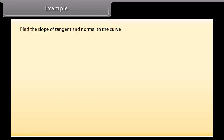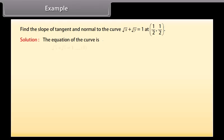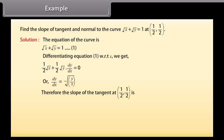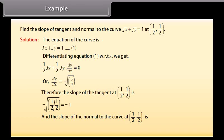Example: Find the slope of the tangent and normal to the curve square root x plus square root y equals 1 at the point 1 by 2 comma 1 by 2. Solution: Differentiating with respect to x gives 1 by 2 square root x plus 1 by 2 square root y into dy by dx equals 0, so dy by dx equals minus square root of y by x. Therefore, the slope of the tangent at 1 by 2 comma 1 by 2 is minus 1, and the slope of the normal is minus 1 by minus 1, which equals 1.